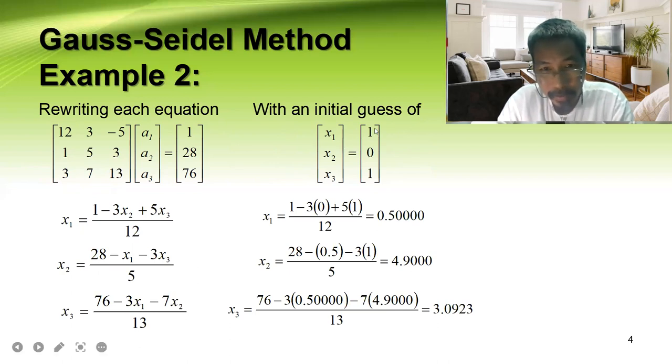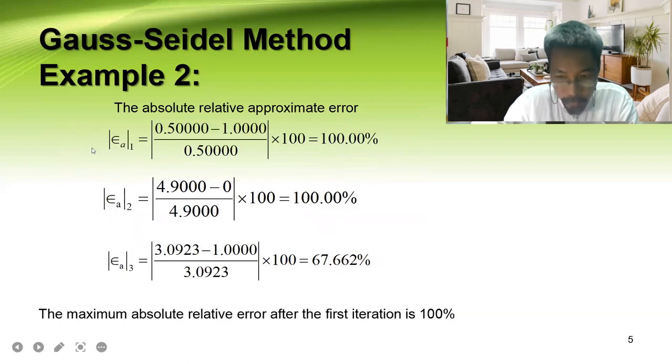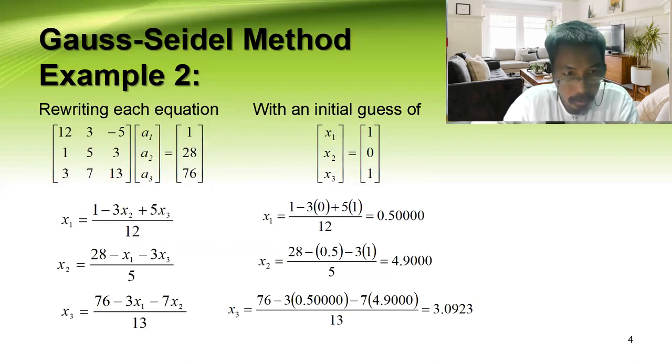Let's continue. Rewriting each equation with an initial guess of one, zero, one. Using that initial guess, let us form the set of equations. It's very easy to form this equation because you just have to put all the other terms on the other side. It will become negative 3x2, it will become positive x3 and divide by 12.